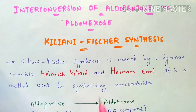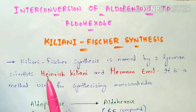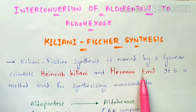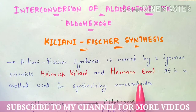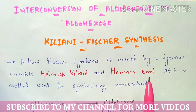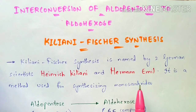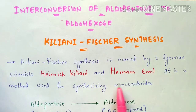What is Kiliani-Fischer synthesis? It is named after two German scientists called Henrich Kiliani and Hermann Emil. It is a method mainly used for synthesizing monosaccharides. Monosaccharides are a classification of carbohydrates called simple sugars. Carbohydrates come in many forms like monosaccharides, disaccharides, polysaccharides, and oligosaccharides.